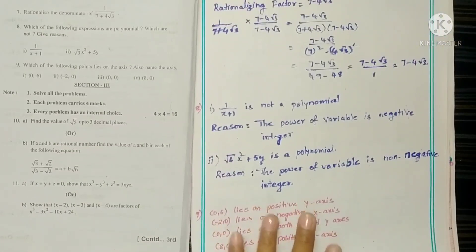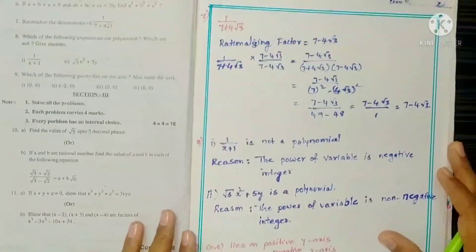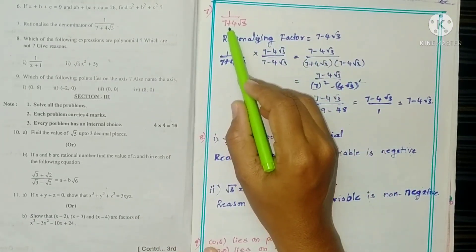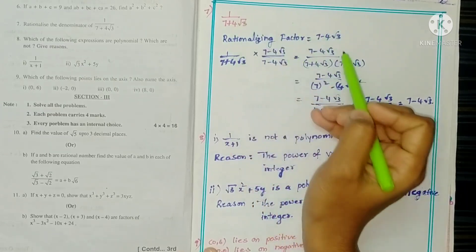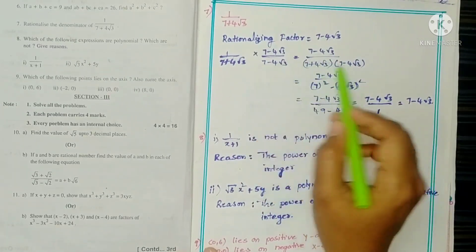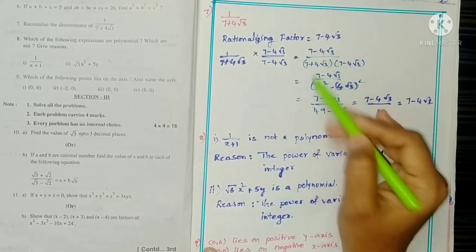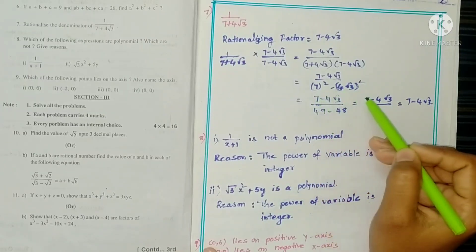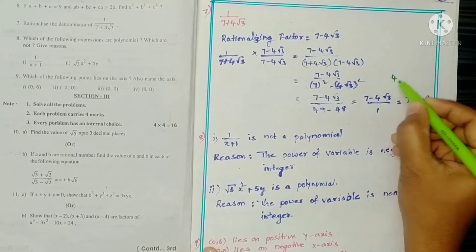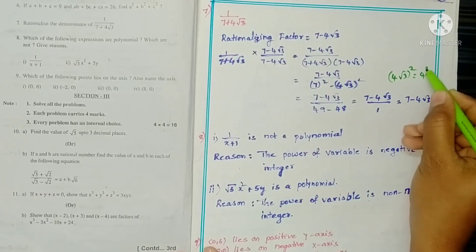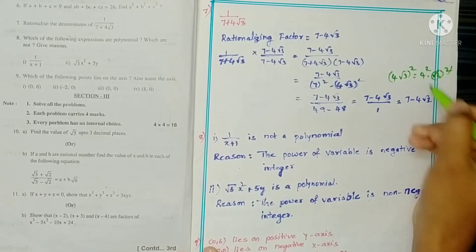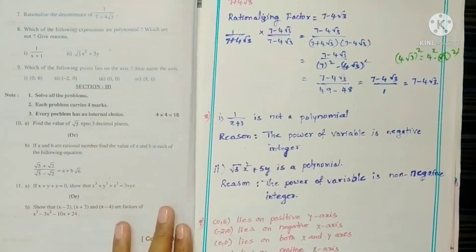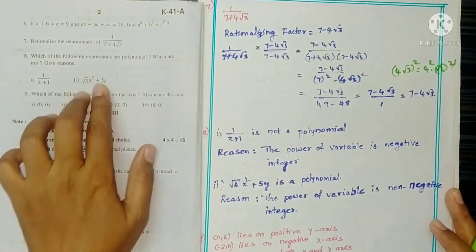Question 7: Rationalize 1/(7 + 4√3). The rationalizing factor is (7 - 4√3). Multiply numerator and denominator. The denominator is in the form (a + b)(a - b) = a² - b², giving 49 - (4√3)² = 49 - 48 = 1. This gives the rationalized solution.